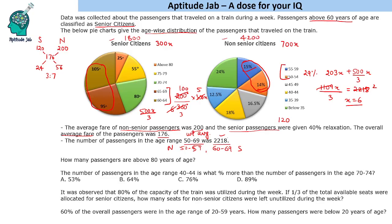This is the essential result needed to answer all questions. The first question asks: how many passengers are above 80 years of age? We need to find 25 degrees on the senior citizens chart. Since 360 degrees corresponds to 1800, one degree equals 5. So 25 degrees equals 25 × 5 = 125. That is the answer.